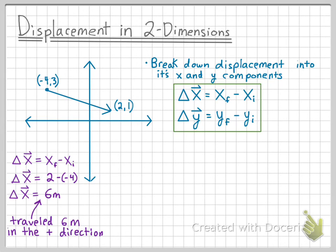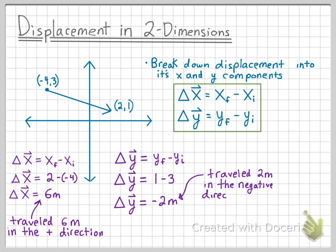Now let's calculate the displacement in the y direction using our equation. We know that the final y position was 1, and the initial y position was 3. And if we subtract these values, we get that our displacement in the y direction was negative 2 meters. This negative sign is important because this tells us that we travel 2 meters in the negative direction, which means down for the y coordinates.